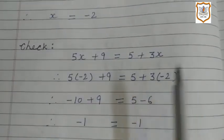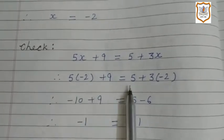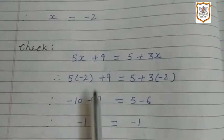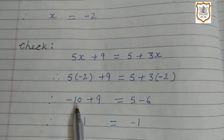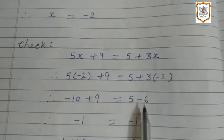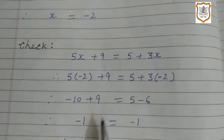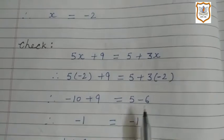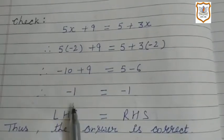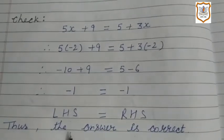Now we will check our result. We put the value of x, which is minus 2. So we write 5(−2) + 9 = 5 + 3(−2). 5 × (−2) = −10, so minus 10 plus 9 = minus 1. And 3 × (−2) = −6, so 5 minus 6 = minus 1. So minus 1 = minus 1. Left hand side equals right hand side, thus the answer is correct.